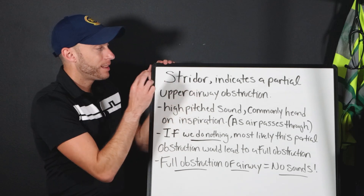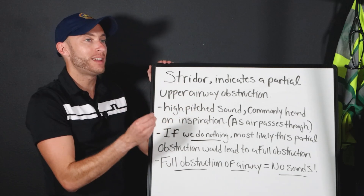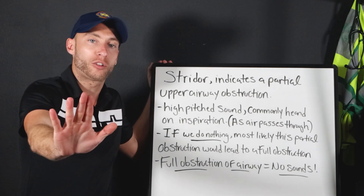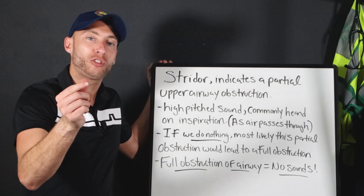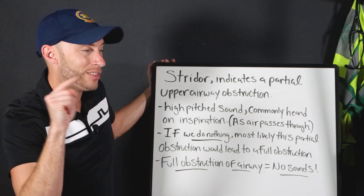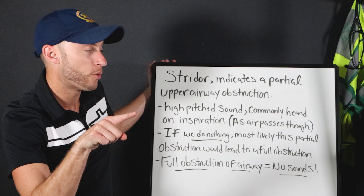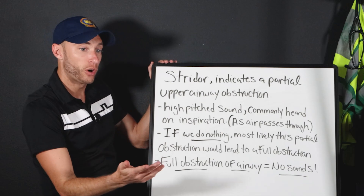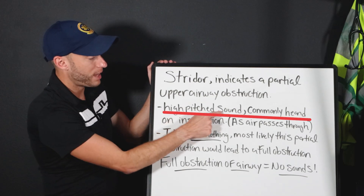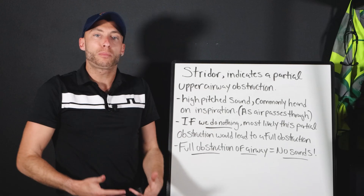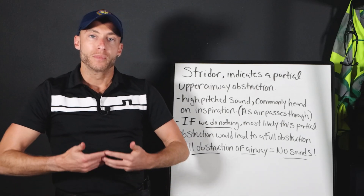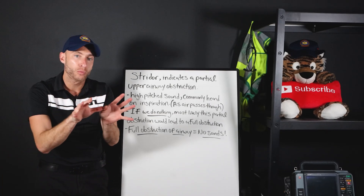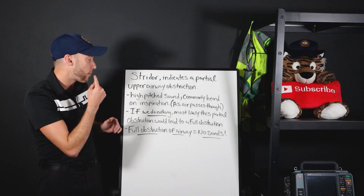With stridor, we're still producing a sound, which means we don't have a full airway obstruction. That partial obstruction produces a stridor sound. Stridor is a high-pitched sound that's commonly heard on inspiration — when we take a breath in, that's where we hear the sound as it passes through that partial obstruction in the upper airway.